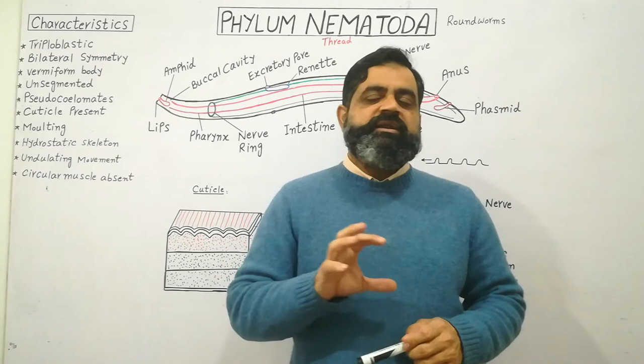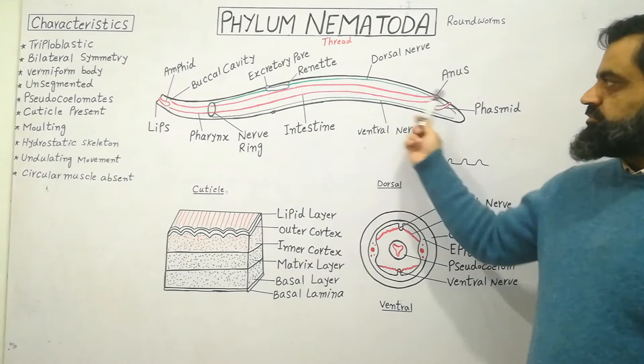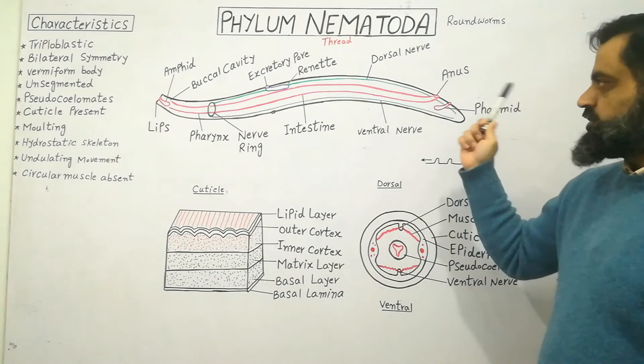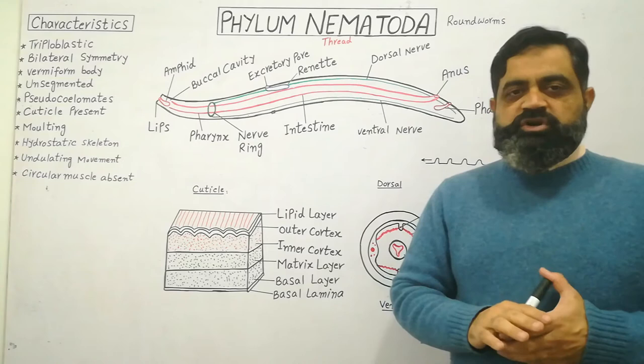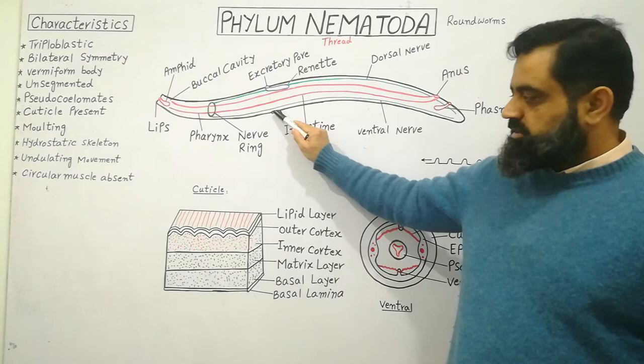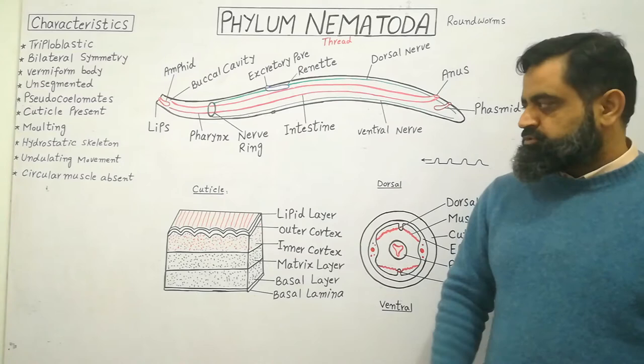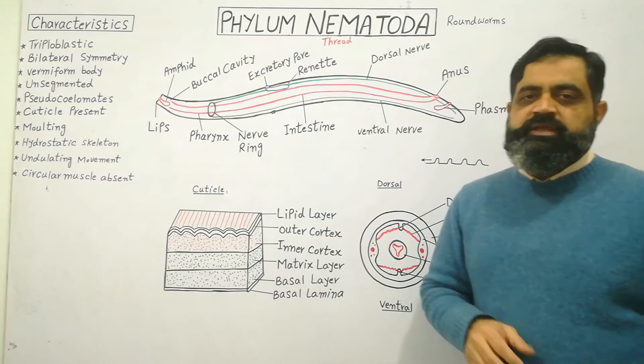Now let's move on to the internal and external structure of the animal. I have made a diagram showing the worm-like body of a nematode, with the anterior end and posterior end labeled. We will first discuss the outermost layer, the cuticle. I have taken a small piece of cuticle and enlarged it with a microscope. The cuticle is composed of lipid and other material including chitin.